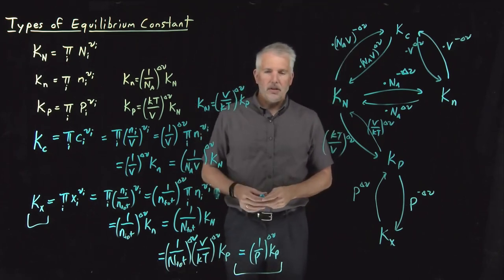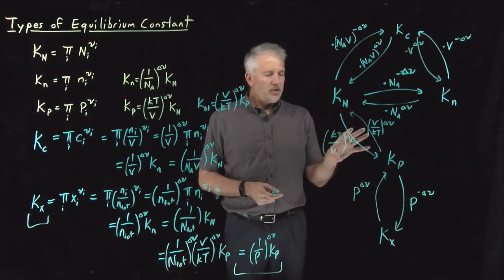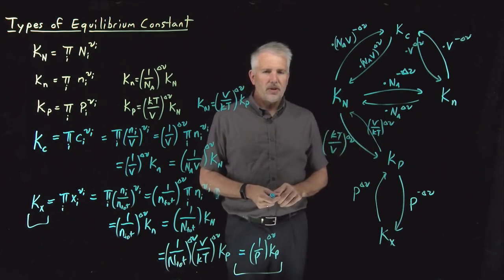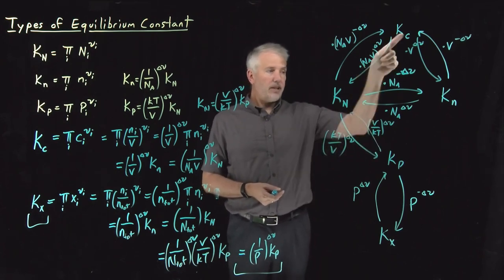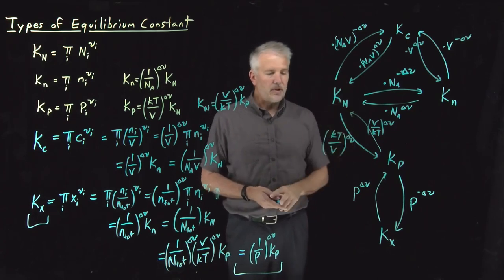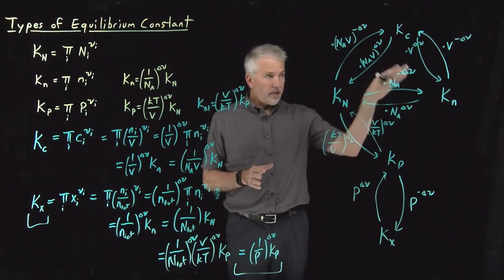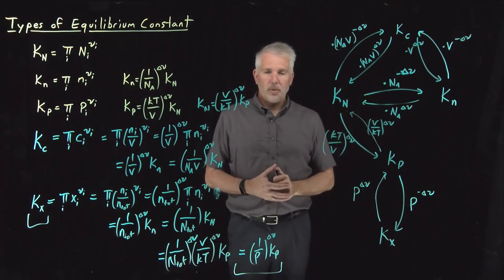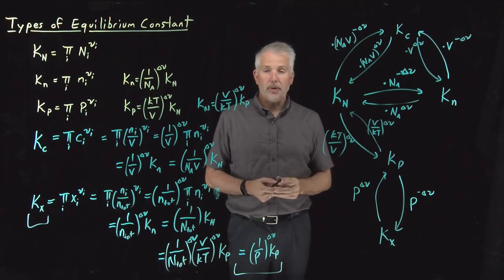This diagram doesn't say anything beyond what we've already written in equations, but it provides an easy reference for deciding which conversions to apply — for example, if you have Kc and want Kp. Now we know how to convert between different flavors of equilibrium constant. We still have a few more things to say about where equilibrium constant values come from, and that's coming up soon.